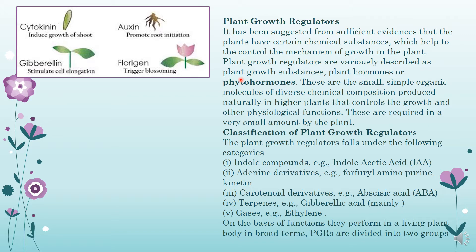Plant growth regulators are variously described as plant growth substances, plant hormones or phytohormones. The way hormones in the human body are required in a very lesser quantity and are produced at a site different from the site of action — for example, the pituitary gland produces the thyroid stimulating hormone and it functions on the thyroid gland, which is away from the pituitary gland — similarly in plant growth also, hormones are produced in one part of the plant and function at a different site. These are small simple organic molecules of diverse chemical composition produced naturally in higher plants that control growth and other physiological functions, and are required in very small amounts by the plant.